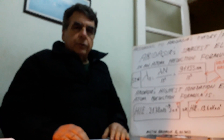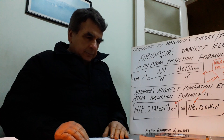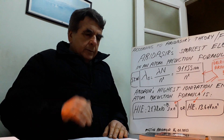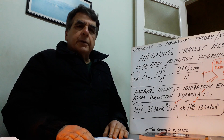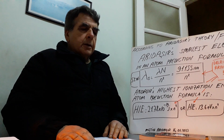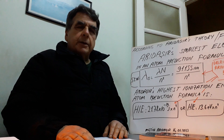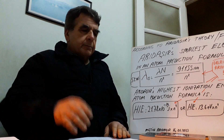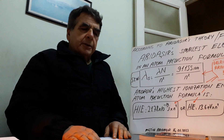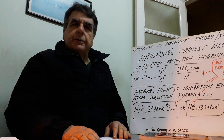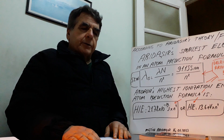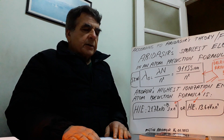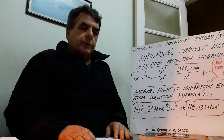According to my theory and my formulas — Metin Adadaşır's highest ionization energy and smallest electron wavelength prediction formulas in an atom. Postulate 1: Only one electron can be bound to each proton in an atom. Every proton can only have one electron. There is at most one electron per proton in an atom.